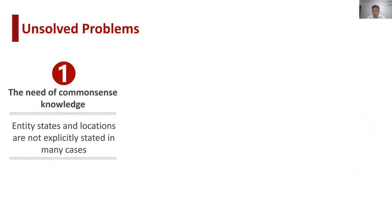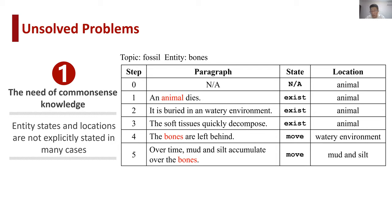Since the proposal of procedural text understanding task, there have been many approaches that reach competitive results. However, there are two major problems that have not been effectively solved. The first problem is the need of common sense knowledge. Entities usually undergo implicit state changes in the process. Besides, their locations are also omitted in many cases, especially when humans can easily infer the location through common sense reasoning. For instance, in this example, due to the decoupling of the entity bones and location animal in the paragraph, the initial location of bones is hard to be directly inferred from plain text, unless the model is aware of extra common sense knowledge: bones are part of an animal.